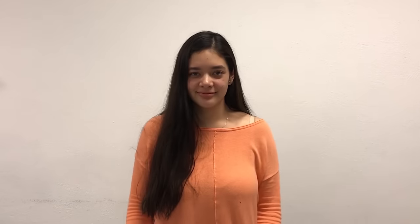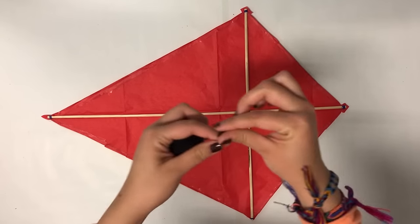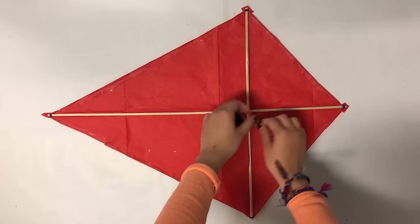Step four, for the last step, grab the string and make a knot in the center of the kite where the sticks come together. Make sure that it is firmly tight.